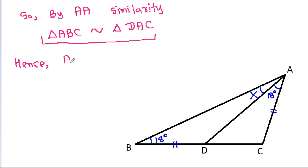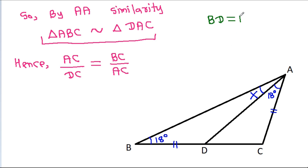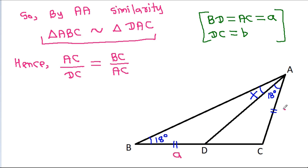Since these two triangles are similar, AC by DC is equal to BC by AC. We have BD equal to AC. Let BD equal to a and DC equal to b, so AC is a and DC is b. Therefore AC/DC = a/b equals BC/AC = (a + b)/a.